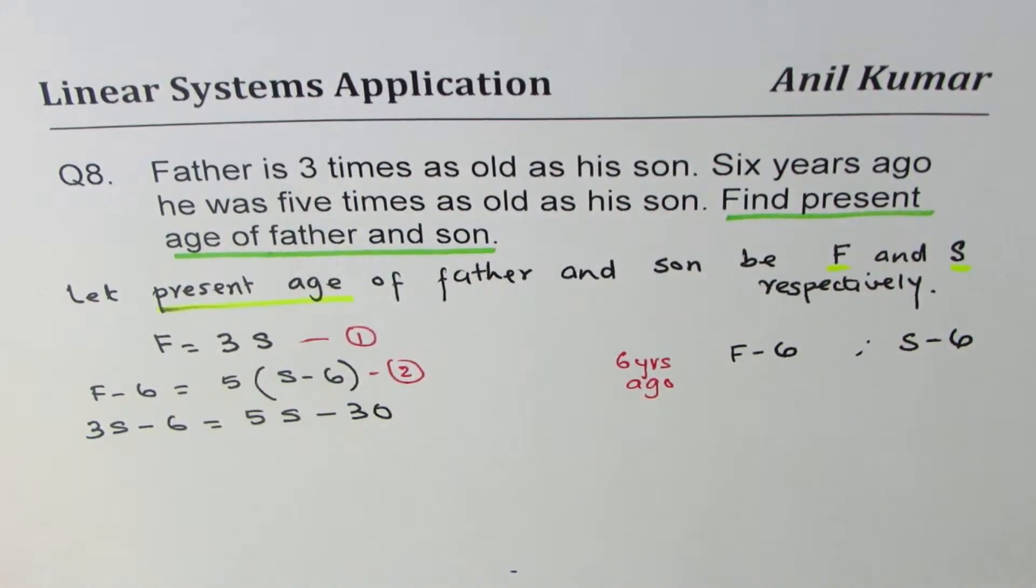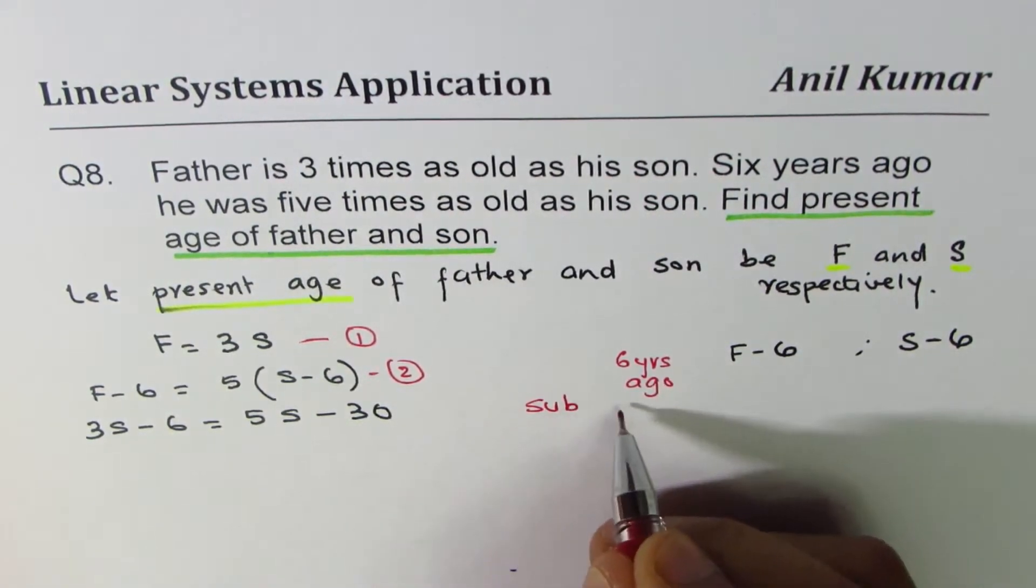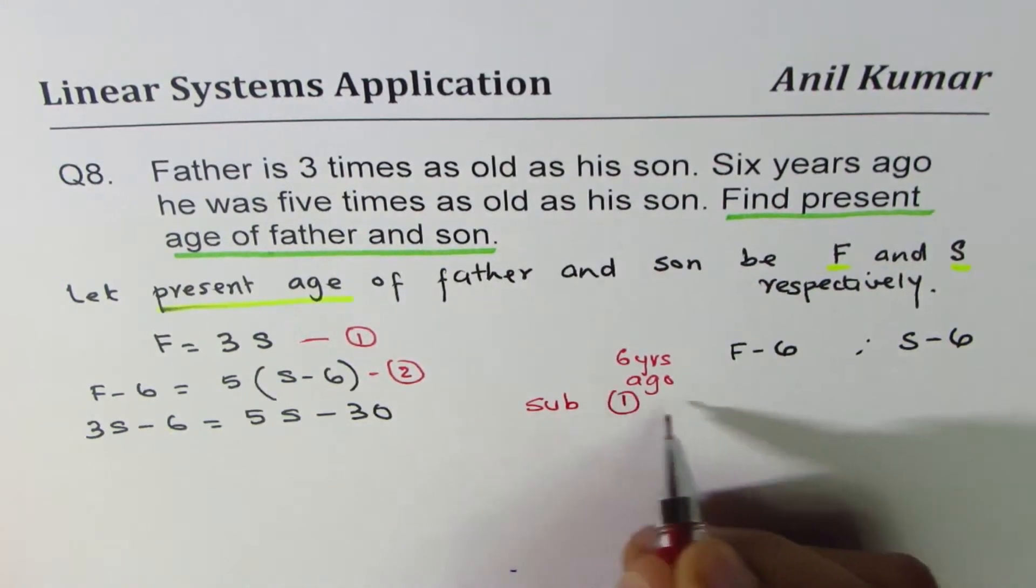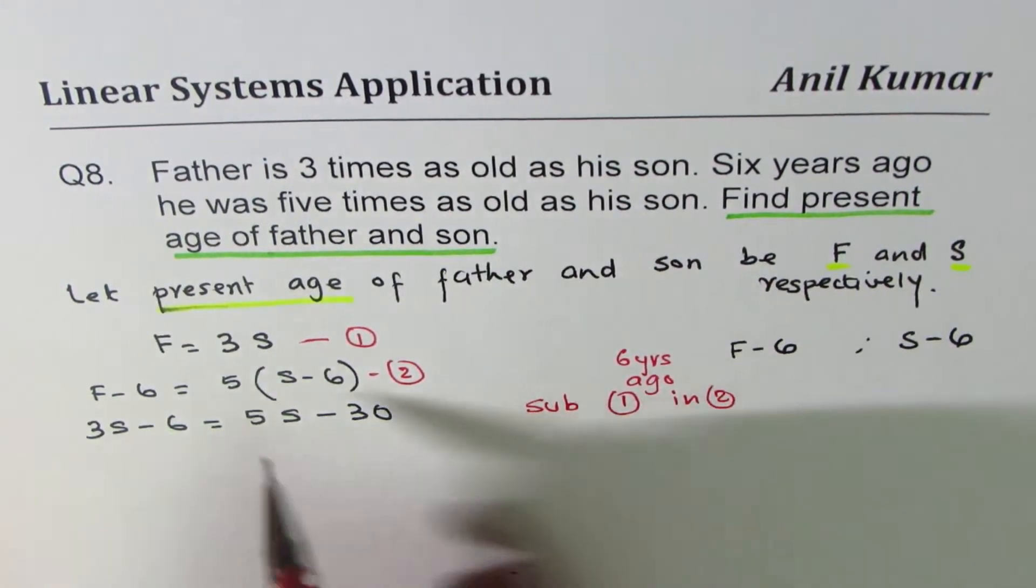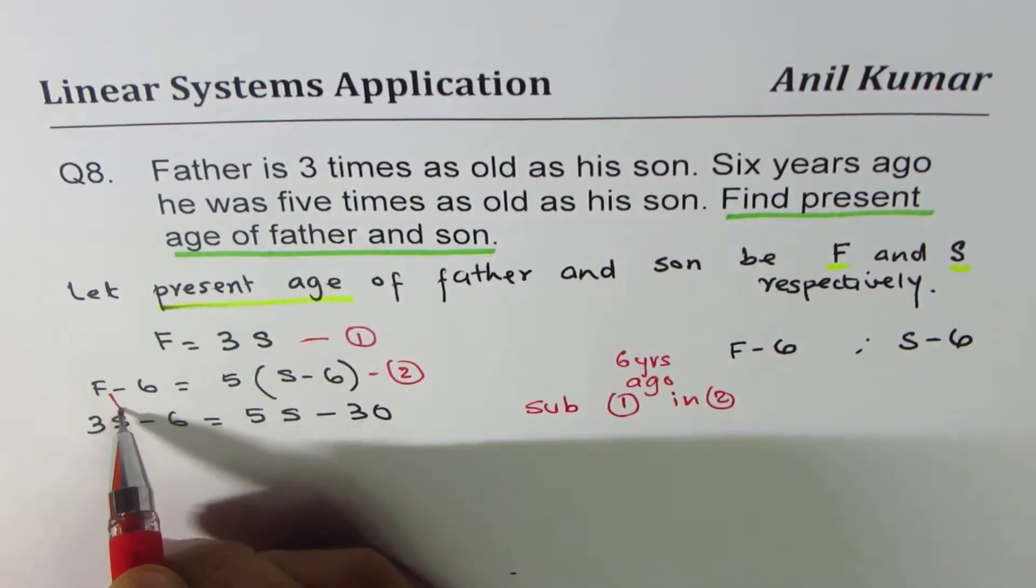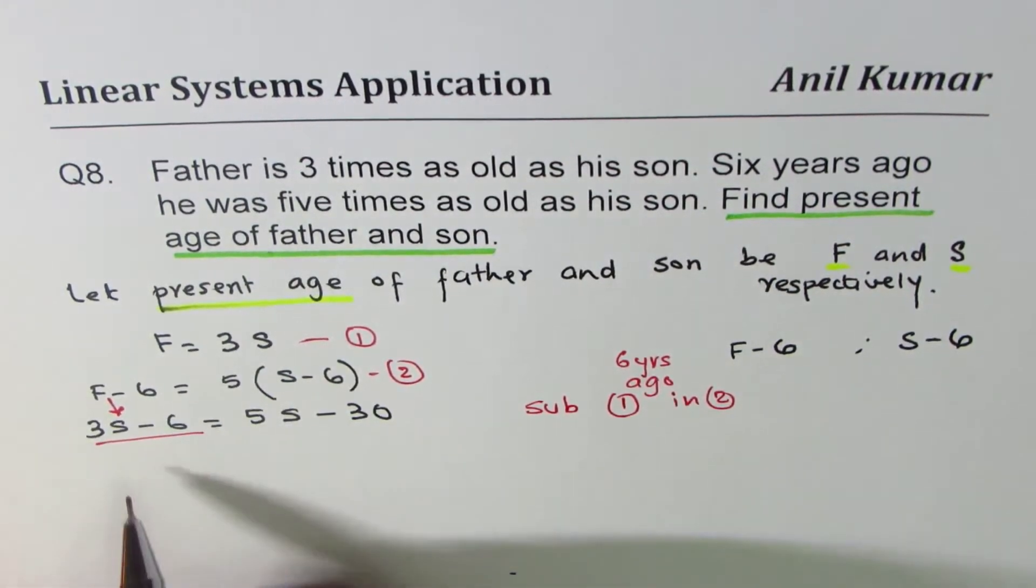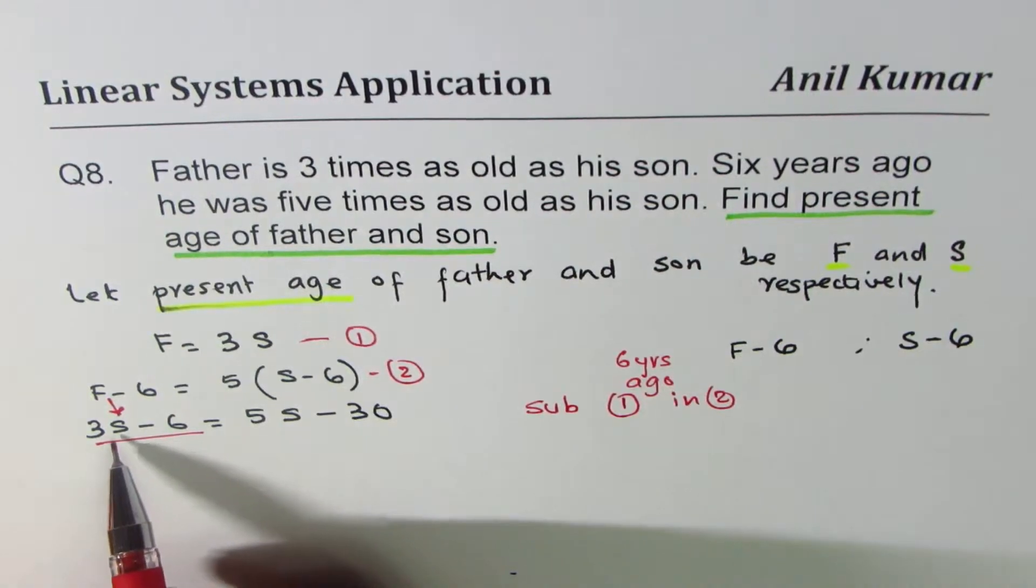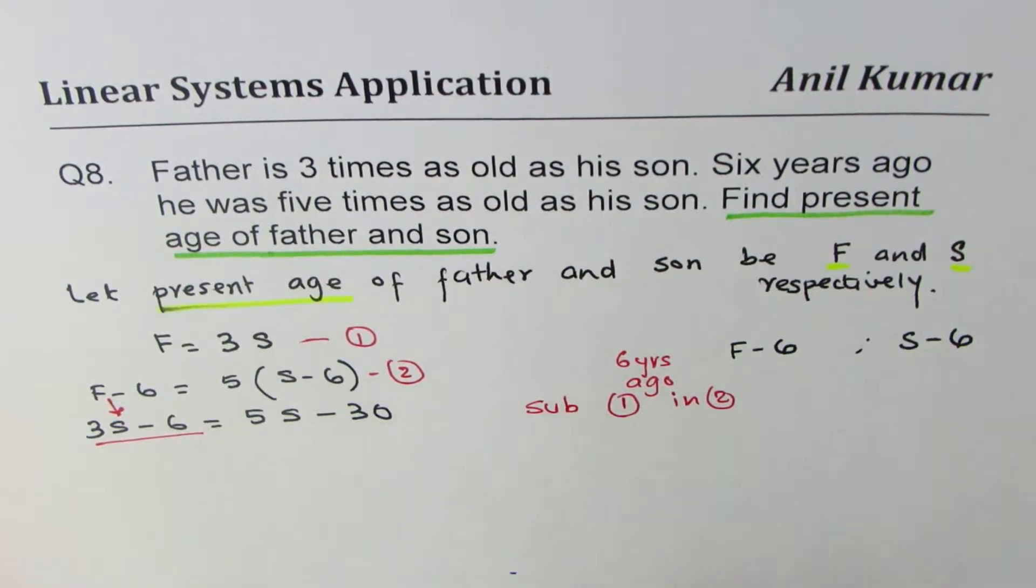So what I did here? I substituted one in two. So F equals three S was substituted here. So the F value has been introduced as three S. So we have now equation in one variable.